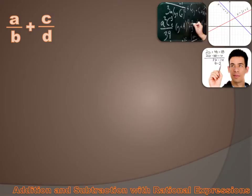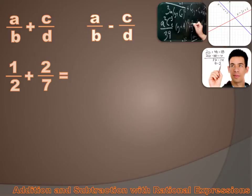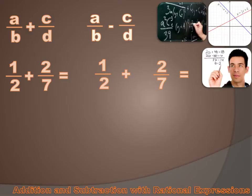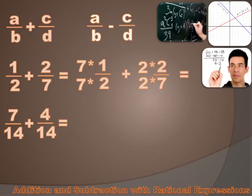We may be asked to add algebraic rational expressions, or we may be asked to subtract algebraic rational expressions. How in the world do we do this? We do it exactly the same way we do it when we have numbers. If we had one half and we wanted to add two sevenths to that, we'd have to have a common denominator. And since two and seven are both prime numbers, we'd multiply the one half by seven over seven, and we'd multiply the two sevenths by two over two. Then we'd carry out that multiplication. We'd have a common denominator, add our numerators, and our answer would be 11 fourteenths.